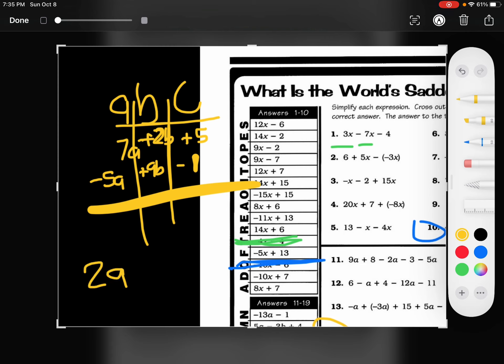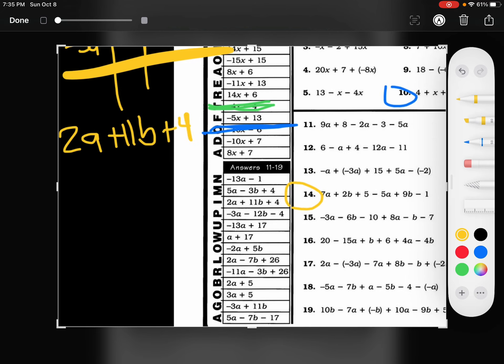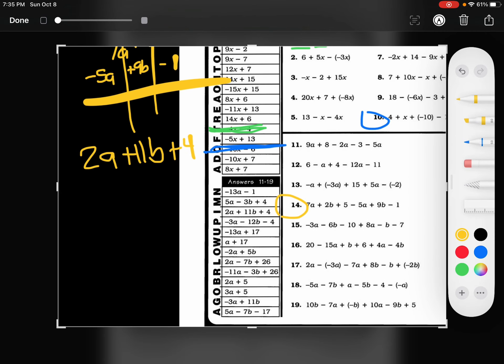Once I get everything separated, 7 minus 5 is 2a, and then 2 plus 9 is 11, so 11b, and then 5 minus 1 is 4. I'm going to look and see if I can find that. There it is.